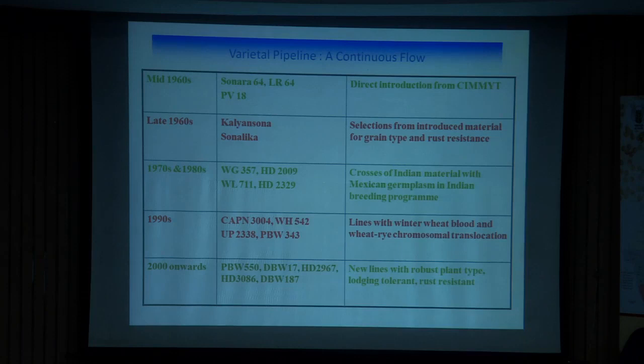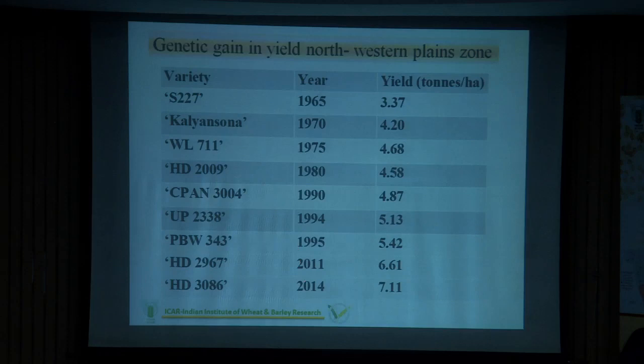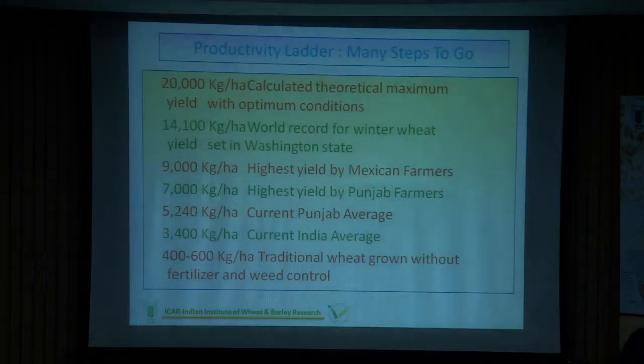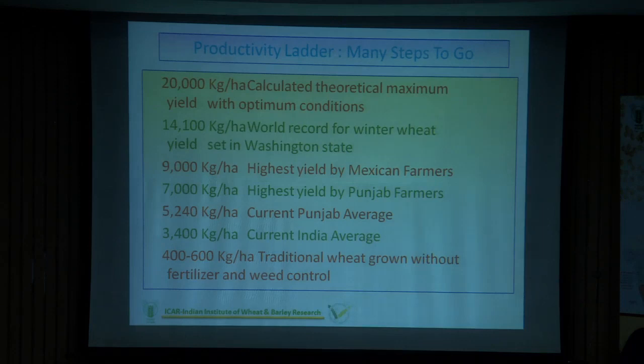You can see how the yield potential of varieties has increased over the years. The current variety DBW187, released in 2018, has around 8 tonnes of yielding potential. Theoretically, we calculate that 20 tonnes is what wheat can give us as maximum potential. It's around 15 tonnes that a farmer in New Zealand recently harvested from one hectare.